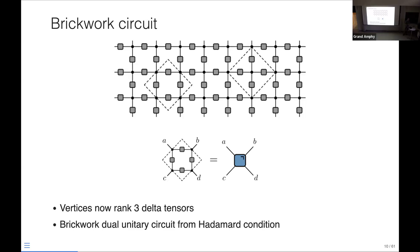The other place where this same structure arises is in brickwork circuits, which have been studied a lot in the context of both quantum computation and many-body dynamics. To see how a brickwork circuit comes out of this tensor network, you identify the elementary gate as this object, where we think of the three-valent tensors as rank-3 delta tensors. You can see that this tensor network can be decomposed as a brickwork circuit. The Hadamard condition in this case tells us that the individual gates satisfy a property called dual unitarity — namely they're unitary going from bottom to top or from left to right.